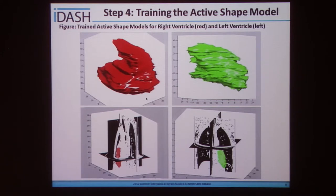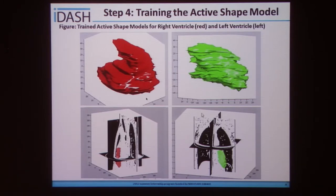Once we had obtained the transformed data, we used it to train the active shape model. Along with the mesh of vertices, we provided the shape model with the CT images, which had the intensity information along the contours defined by the segmentation. Using the intensity information from the CTs and segmentations provided, the active shape model was trained. The figures represent the training active shape model for the right ventricle shown in red and the left ventricle in green.